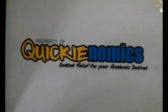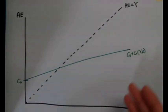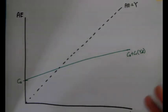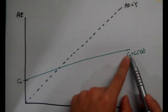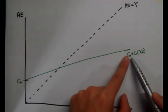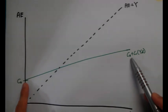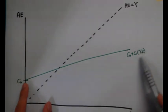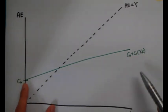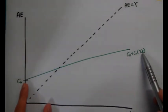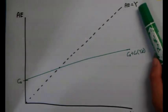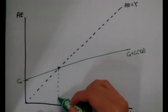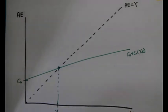Before ending, let me show you the aggregate expenditure graph. If this economy has only households, the AE curve looks like this. C-naught is autonomous consumption — the consumption not affected by income — so it is fixed at C-naught. However, C₁ is the portion of consumption dependent on income, which is why it has a slope: as disposable income increases, spending increases. Aggregate expenditure equals income at equilibrium, so that intersection point identifies our equilibrium output Y-naught.